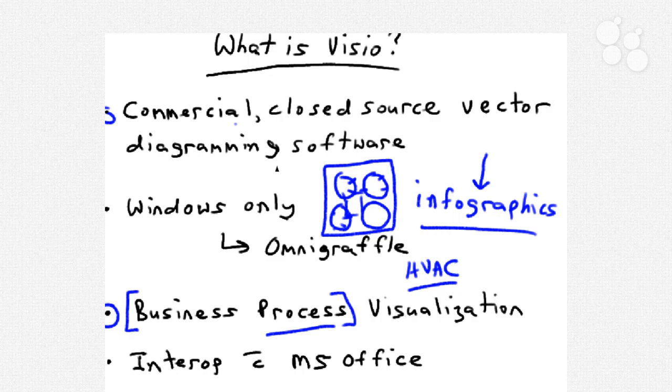Now, the first definition I gave you for Visio, I said that Visio is commercial closed source software. Now, what does that mean? This means that Visio's source code is protected and proprietary. It's owned by Microsoft, so we don't have any community development as such on the application.